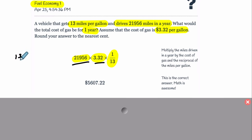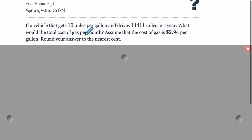So it's just miles times cost times the reciprocal of the miles per gallon. And that means, so it's 13 miles per gallon, so 13 miles for every one gallon. The reciprocal is that flipped around, so it's one gallon every 13 miles. And that's what this is right here. A reciprocal is just a fraction flipped. That's what's happening. Now let's go to another example. And you see how similar this problem is. What we're told here, a vehicle that gets 10 miles per gallon and drives 14,411 miles per year. What would the total cost of gas be per month? Assume the cost of gas is $2.94 per gallon. Round your answer. So we'll do the same stuff.